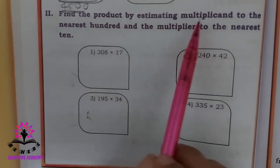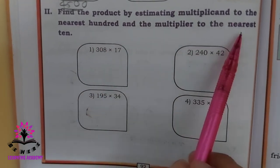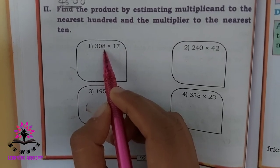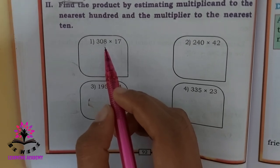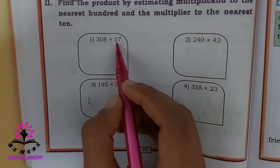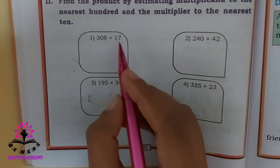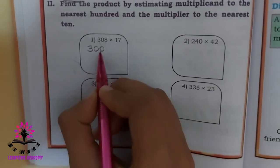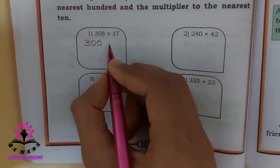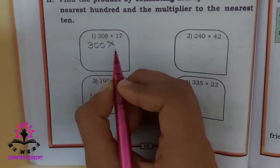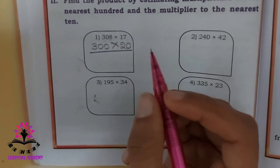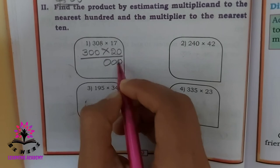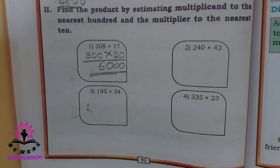Number 2: find the product by estimating the multiplicand to the nearest 100 and the multiplier to the nearest 10. The multiplicand's nearest 100 value — like 100, 200, 300, 400 — and the multiplier's nearest 10 value. For 308, the nearest 100 value is 300. For 17, the nearest 10 value is 20. Count the zeros: there are three zeros, and 2 times 3 is 6, so the answer is 6000.